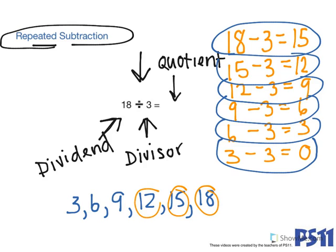1, 2, 3, 4, 5, 6. Yep, it worked. So using repeated subtraction told me that the answer to our original equation 18 divided by 3 is 6.